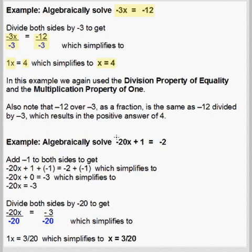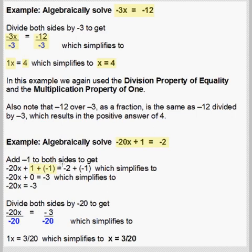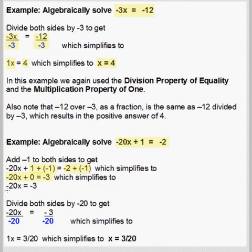In our second example, we have the equation negative 20x plus 1 equals negative 2. This means negative 20 times some number x added to 1 equals negative 2. We need two steps to get x by itself. Our first step is to get rid of that 1 on the left side by adding negative 1 to both sides. On the left, 1 plus negative 1 gives us 0. On the right, negative 2 plus negative 1 gives us negative 3. So our resulting equation is negative 20x equals negative 3 by the addition property of 0.